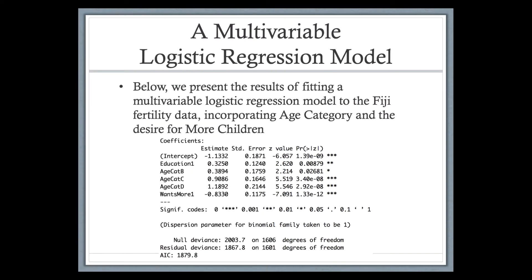Now that we've introduced the logistic regression model and saw how we can use it to reproduce the 2x2 table analysis and the odds ratio, we're going to look at a multivariable logistic regression model — using more than just one x variable. Here we're showing results from fitting a logistic regression model for the VG fertility data, incorporating both the age category and desire for more children.